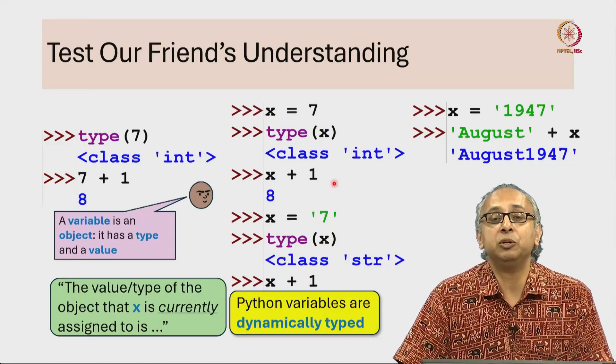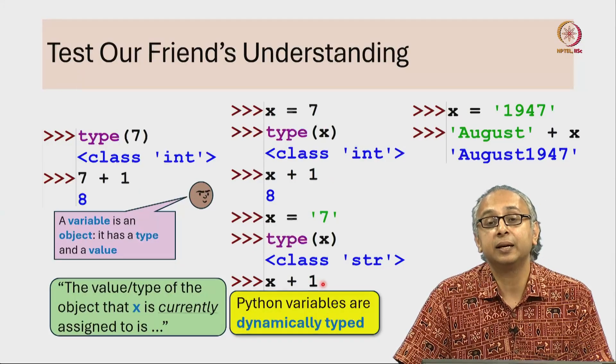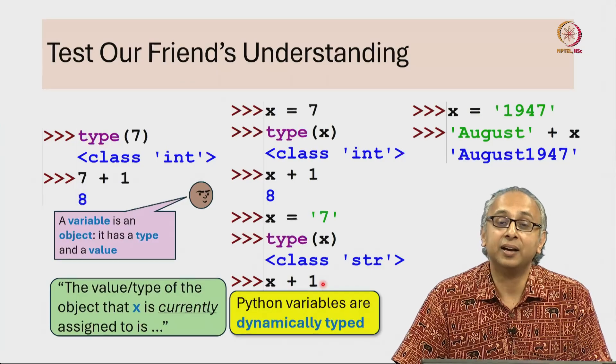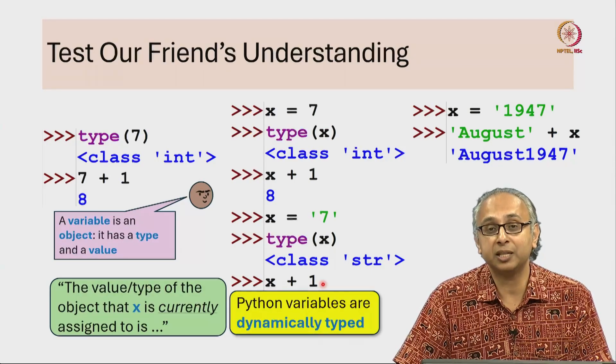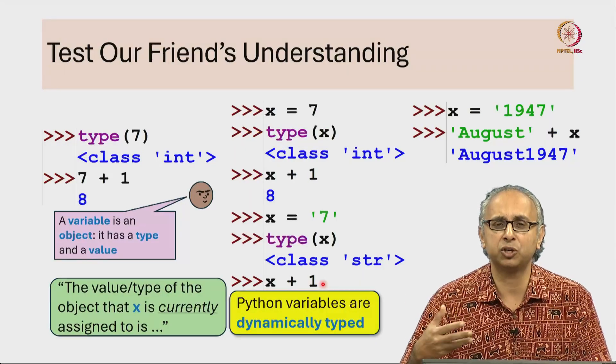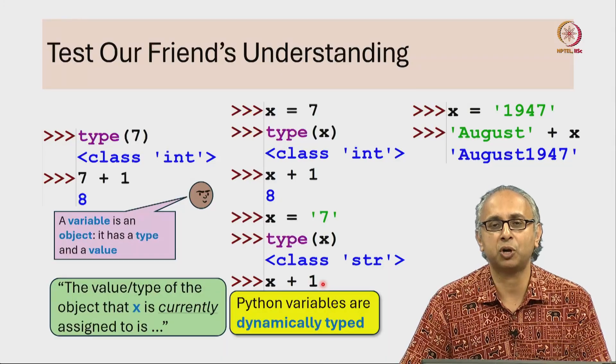But if later on, at this point, x refers to a string object, you cannot add a string and an integer together because plus corresponds to concatenation for strings and it corresponds to regular addition for integers, and Python doesn't know how to do this combination.